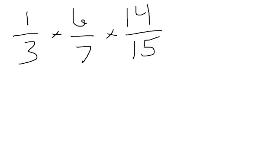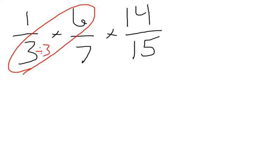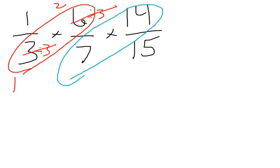Here's the benefit of cross-reducing: what if you have a problem like 1 third times 6 sevenths times 14 over 15? Cross-reducing makes the multiplication much, much more simple, and it also makes the reducing process much simpler. I can cross-reduce diagonally any way I want. Looking at 3 and 6, they share a common factor of 3 — so I divide both by 3: 6 divided by 3 is 2, and 3 divided by 3 is 1. Now I look at 7 and 14 — I can divide both by 7: 14 divided by 7 is 2, and 7 divided by 7 is 1.